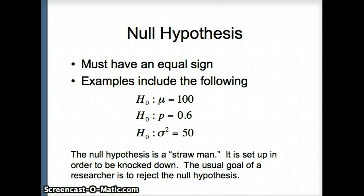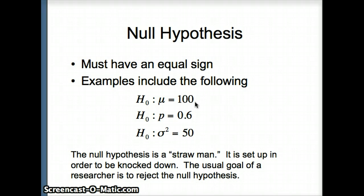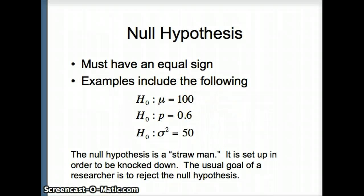In essence, the null hypothesis is a straw man — it is set up in order to be knocked down. The usual goal of the researcher is to reject the null hypothesis. For example, if H0 is mu equals 100, we might have enough evidence to say, looking at our descriptive statistics and how extreme they are, that mu probably wasn't 100 — that the parameter underlying this data set probably was not 100.